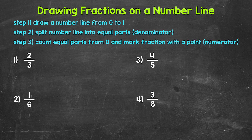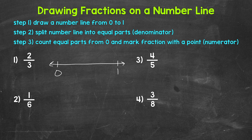Let's jump into number one, where we have two-thirds. Step one, we need to draw a number line from zero to one. So we have a number line here from zero to one, and this distance from zero to one is one whole.